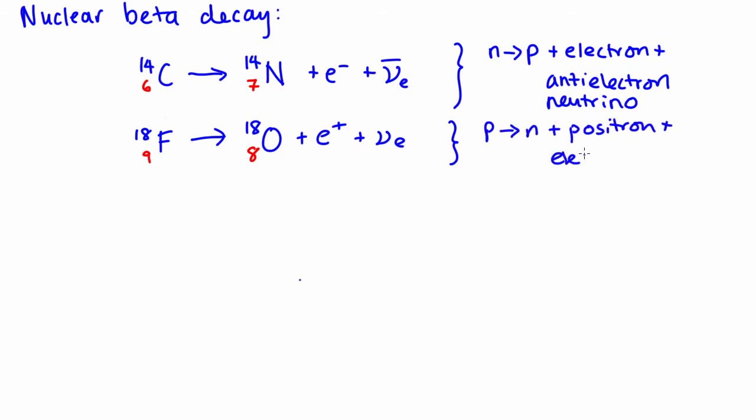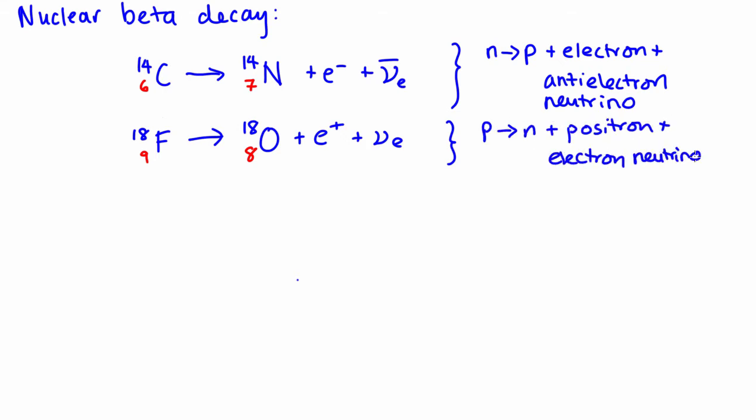The electron anti-neutrino and the electron are both reaction products in the first beta-decay process, while the electron neutrino and the positron are reaction products in the second beta-decay process.